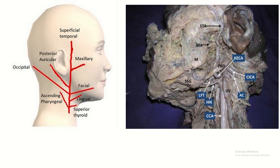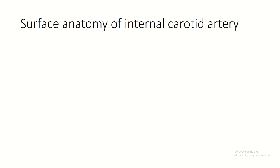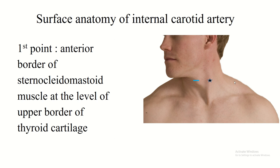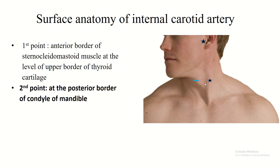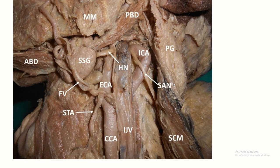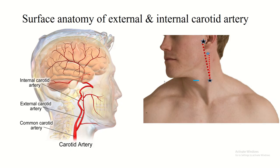In dissection, this is the external carotid artery and these are its two terminal branches: the maxillary artery and the superficial temporal artery. Surface anatomy of the internal carotid artery: first point at the anterior border of the sternocleidomastoid at the level of the upper border of the thyroid cartilage; second point at the posterior border of the condyle of the mandible, or in front of the tragus. This is the common carotid, external carotid, and internal carotid artery, along with the internal jugular vein.